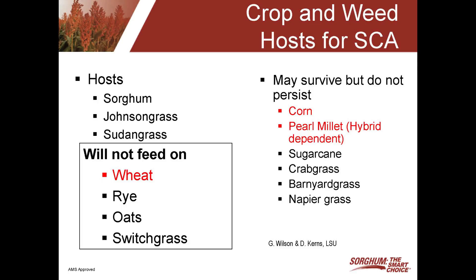Another question is what plants will the sugarcane aphid survive on? For the most part, the sugarcane aphid is pretty much limited to the sorghum genus — grain sorghum, forage sorghum, johnsongrass, sorghum-sudan crosses, and sudan grasses. They may actually survive for a few days on some other crops like corn, pearl millet, sugarcane, and some grasses like crabgrass and barnyard grass, but they don't cause any damage to those plants. If you have a heavily infested sorghum field, it's not unusual to see a few aphids in an adjacent cornfield, but the population shouldn't increase and shouldn't cause any issue.